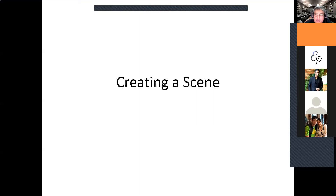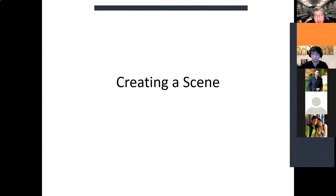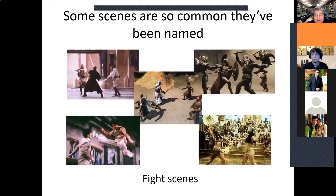In the first lecture, to recap, we talked about creating characters using the character diamond — creating a character with four conflicting traits to make an interesting character that readers, viewers, and players can connect with. In our last lecture on Thursday, we looked at how to create a story, a plot, using the three-act structure from the time of Aristotle.